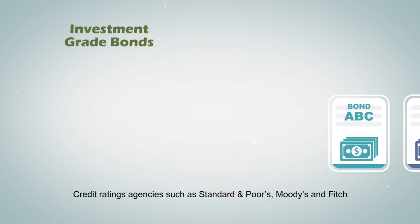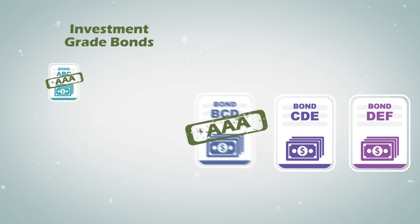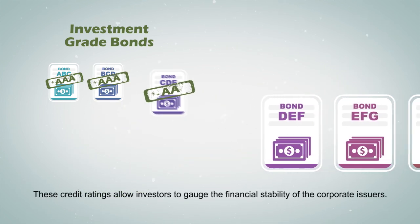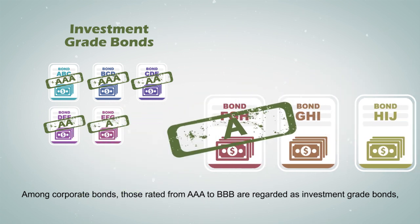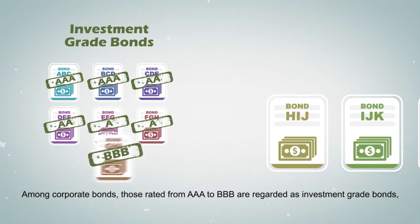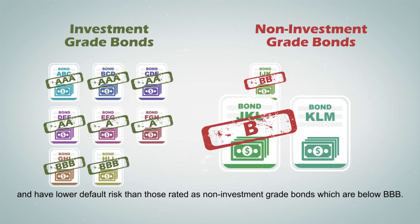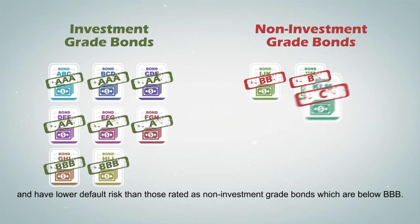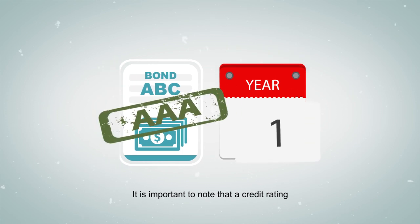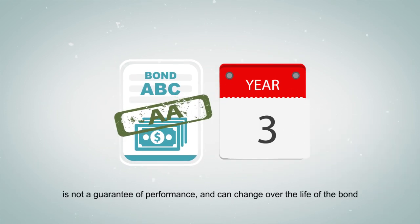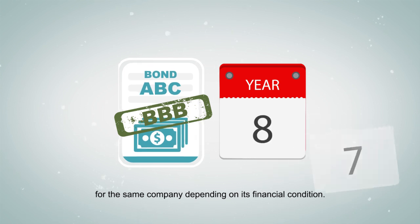Credit rating agencies such as Standard & Poor's, Moody's, and Fitch assign credit ratings to corporate bonds. These credit ratings allow investors to gauge the financial stability of the corporate issuers. Among corporate bonds, those rated from AAA to BBB are regarded as investment-grade bonds and have lower default risk than non-investment-grade bonds, which are below BBB. It is important to note that a credit rating is not a guarantee of performance and can change over the life of the bond for the same company depending on its financial conditions.